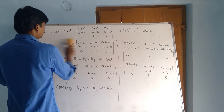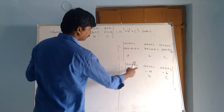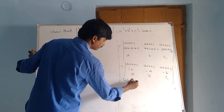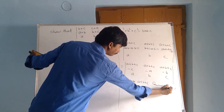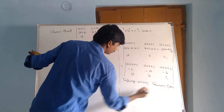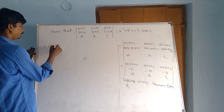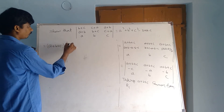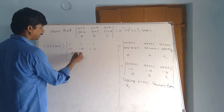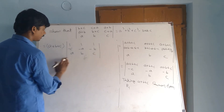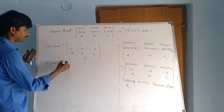Now take (A+B+C) common from R1. That equals (A+B+C) times the determinant with rows (1, 1, 1), (minus C, minus A, minus B), (A, B, C). Now applying the determinant expansion here.